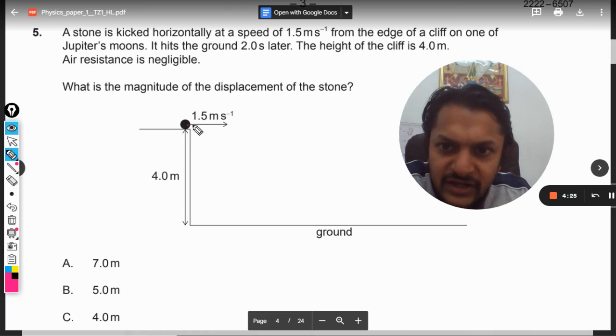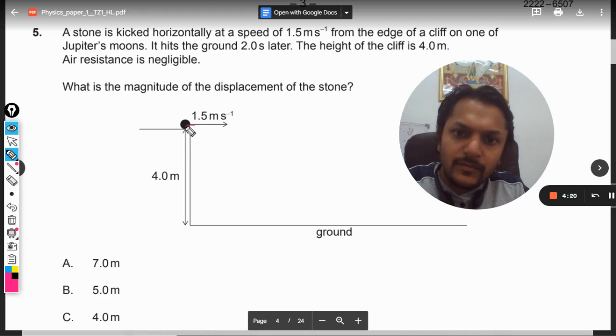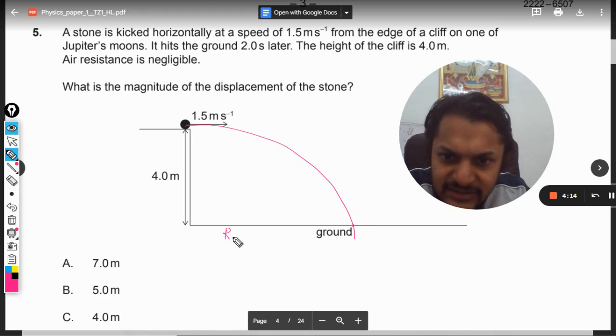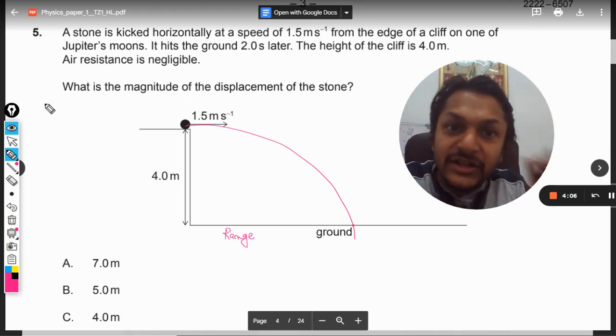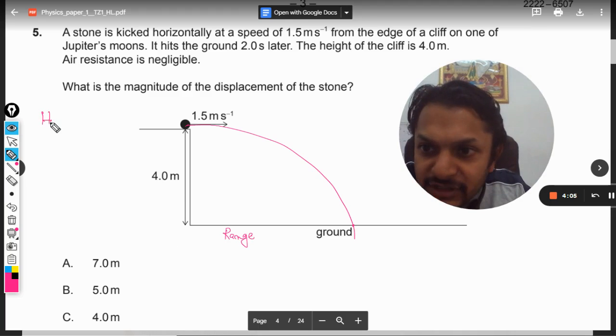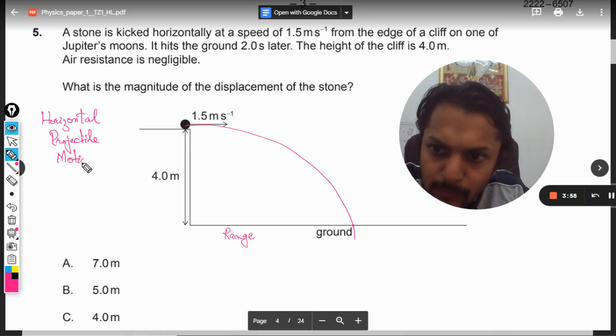Now if we are kicking a stone like this, what happens? It will follow this trajectory. After some time it is going to hit the ground. This is known as range. These kinds of questions have been given a special name. What is the name for this topic? Horizontal projectile motion.